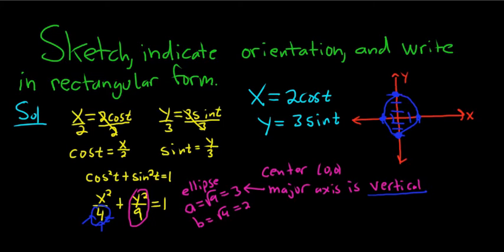Then we just connect the dots. So we have almost two, we have two answers down, right? This is one answer. This is rectangular form. So I'll put rect form. We have the graph. Okay, we have the graph. Now we just need to indicate the orientation.